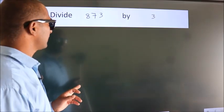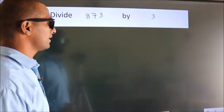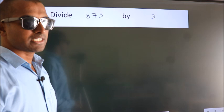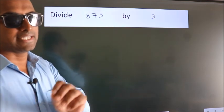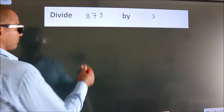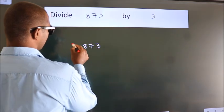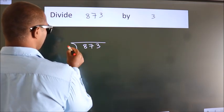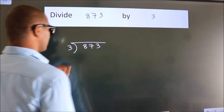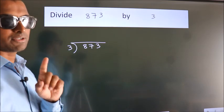Divide 873 by 3. To do this division, we should frame it in this way. 873 here, 3 here. This is your step 1.